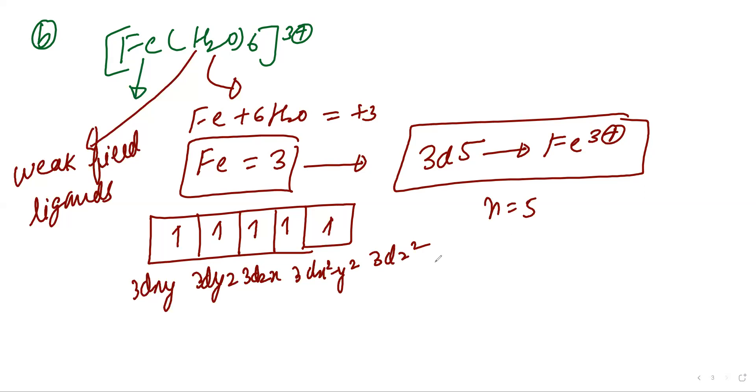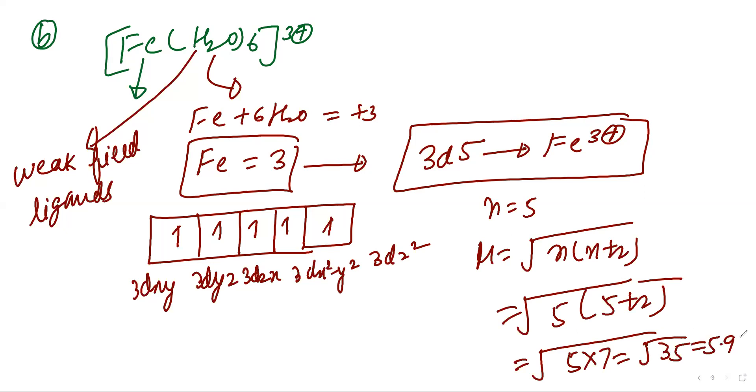So formula is under root n into n plus 2. It will equal under root 35, so it will be equal to 5.9 Bohr magnetone. See the explanation for third part.